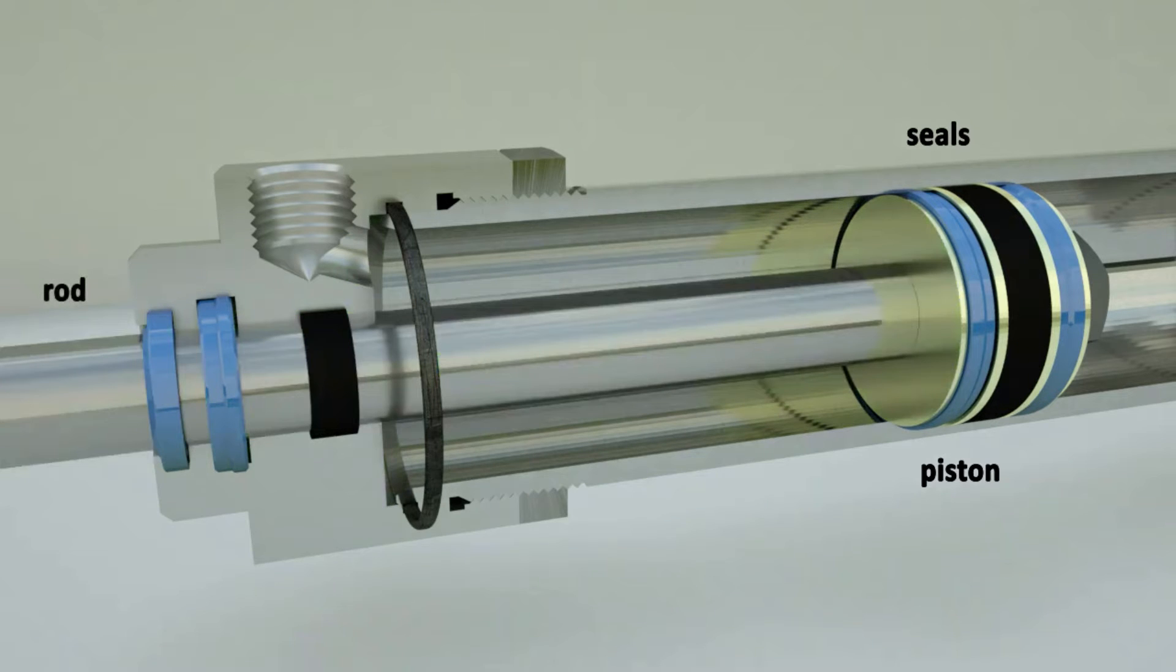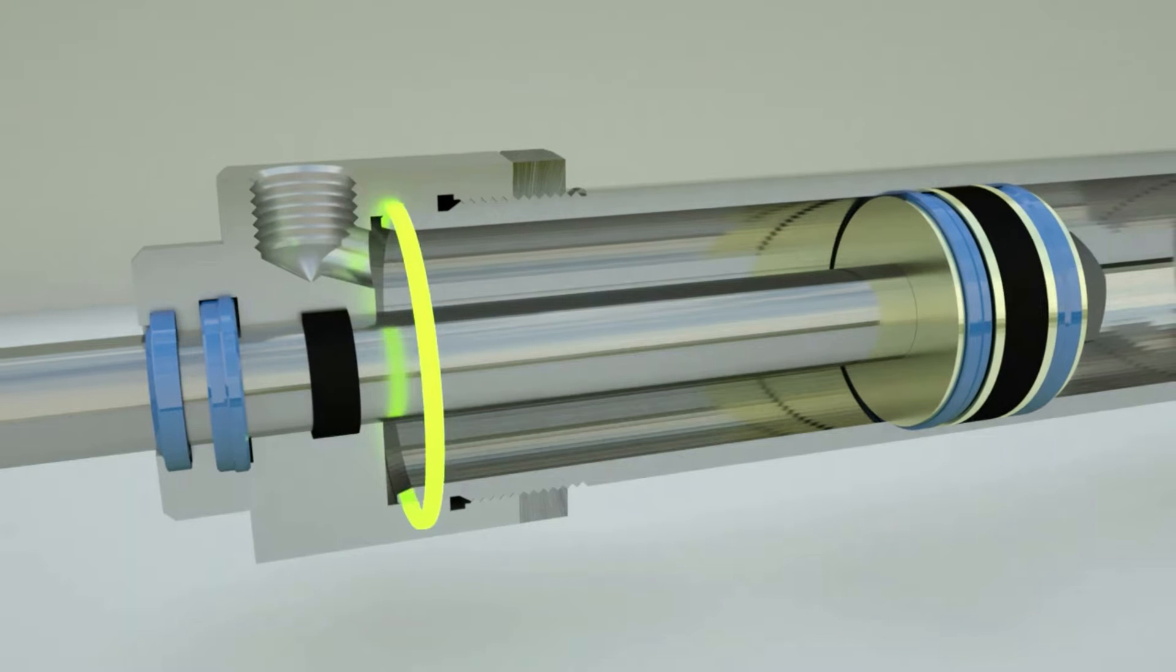The front cap has a bore in which the piston rod moves. The front cap contains a seal to prevent fluid leakage from the cylinder over the rod and a wiper to remove dust and dirt from the rod. There must be seals at the contact points between the tube and the caps.